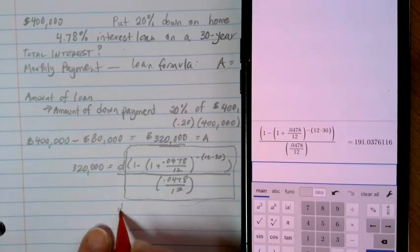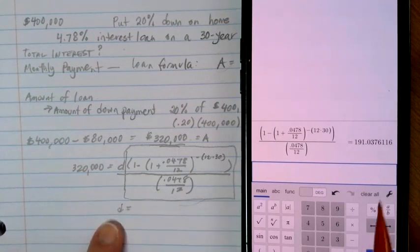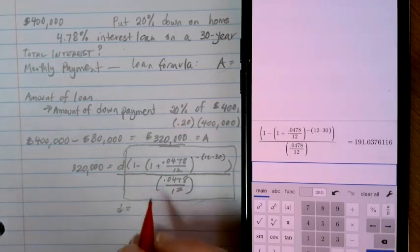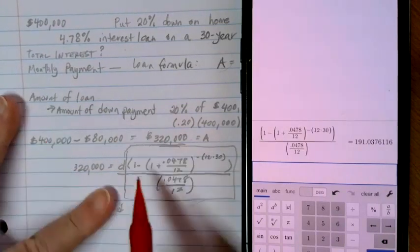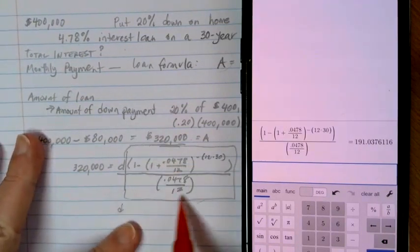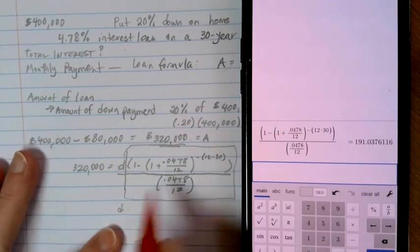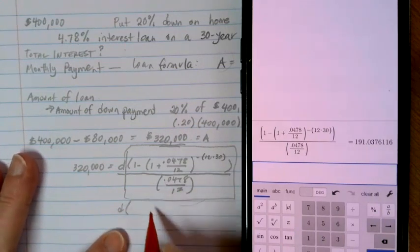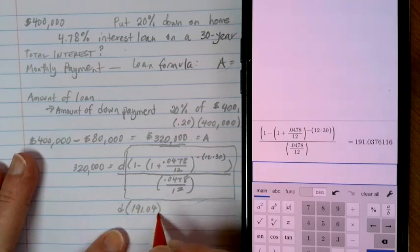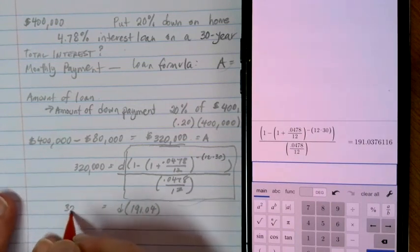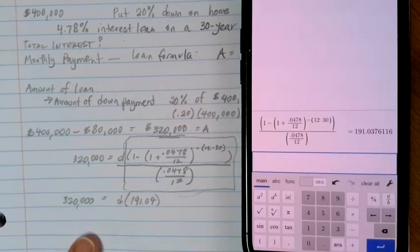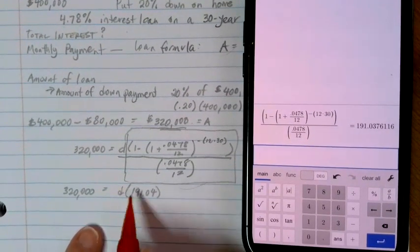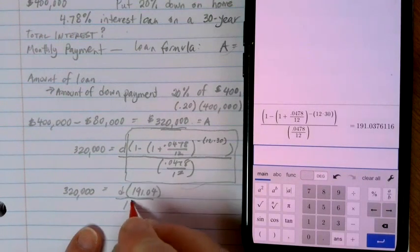So remember, this is not our D. We'd be excited if we only had to pay $191 for rent, but that's not very realistic. Remember that 191 is what we get when we simplify everything here. So it's D times that 191.04 is equal to $320,000. Now we have a pretty straightforward equation to solve. Just divide by $191.04 on each side.